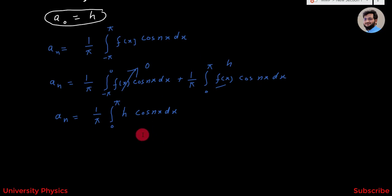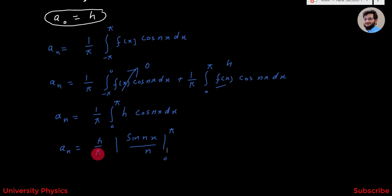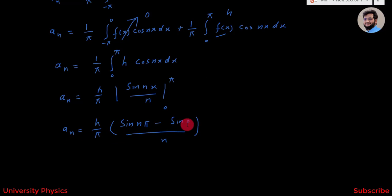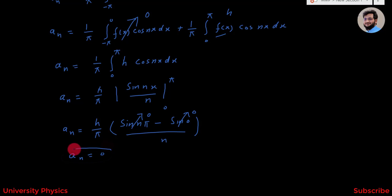Integrating, we know the integral of cos(nx) is sin(nx)/n. So aN = (h/π) · [sin(nx)/n] from 0 to π = (h/π) · (sin(nπ) - sin(0))/n. Since sin(nπ) = 0 and sin(0) = 0, the value of aN = 0.